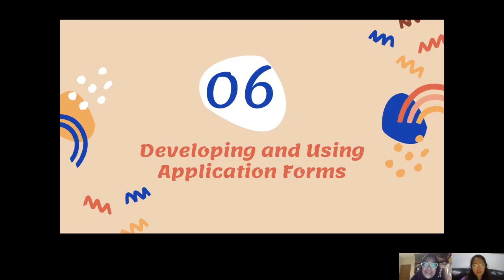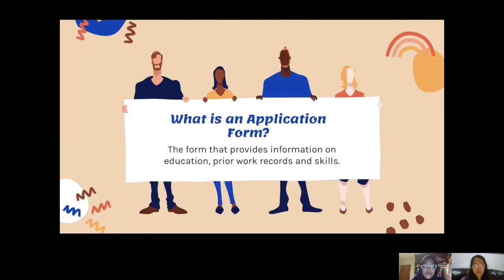The last learning objective is developing and using application forms. Before knowing how to develop and use the application form, we need to know what it is. The application form provides information on education, prior work records, and skills for applying to a company as a future employee. As job applicants, we need to fill in the form that provides information about our education, prior records, and skills.